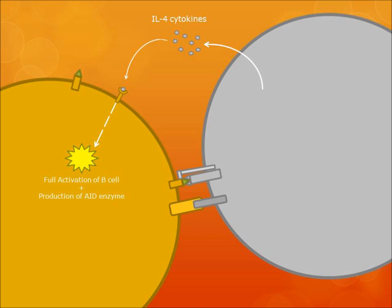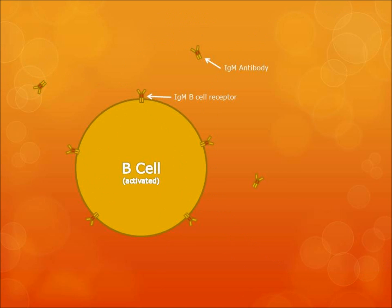The activated B cell either travels to the tissues or remains in the lymph and blood, and begins to make IgM antibodies. IgM antibodies are the least specific antibodies and are the first to be made and respond to the infection.